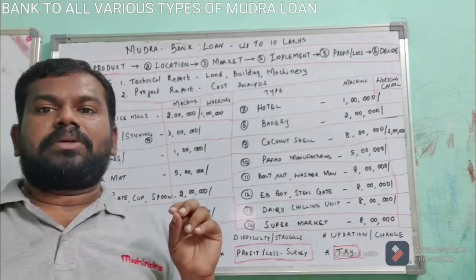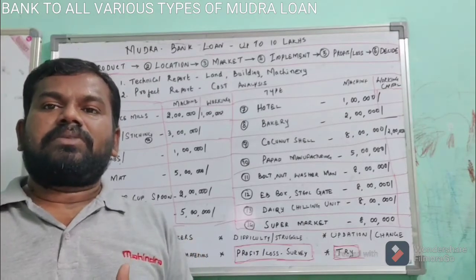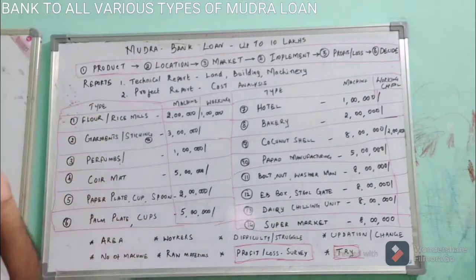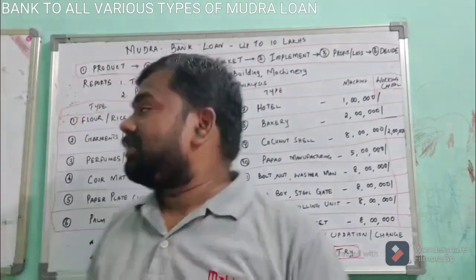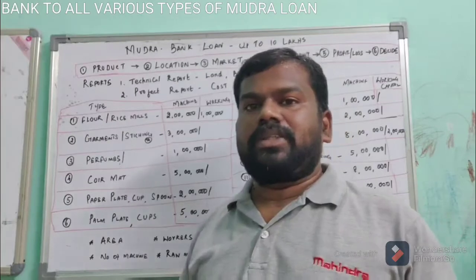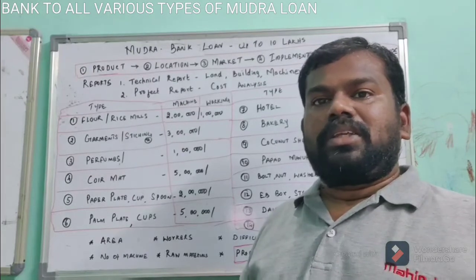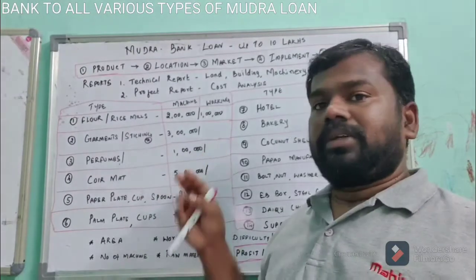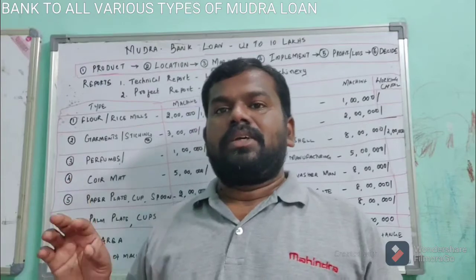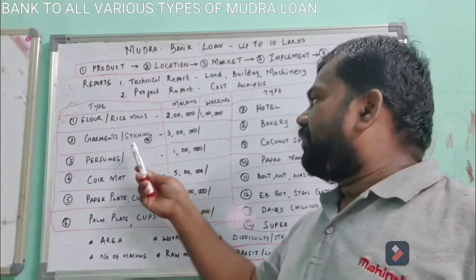If you go to the Prime Minister Mudra website, there are nearly 27 businesses listed, each with a technical report and project report — you can make yourselves successful using those. One business is rice mills or flour mills. This is a small rice mill with a pulverizing machine for flour, rice, chili, masala, and sambar masala packets — various products sold in the mill itself. With a machinery cost of around two lakhs, you can get started.